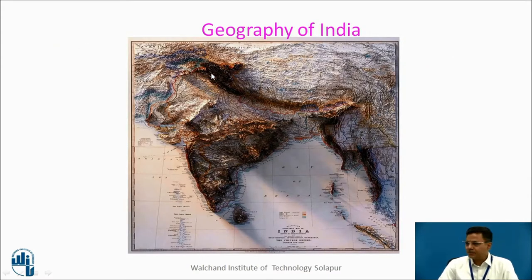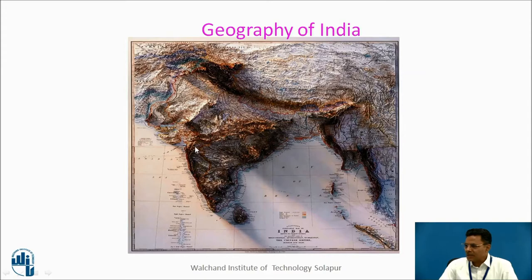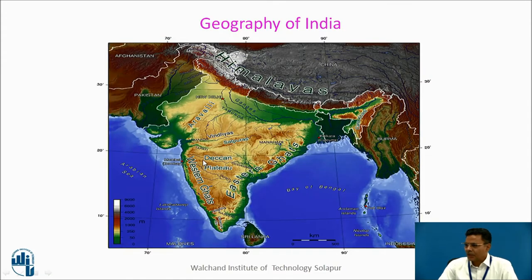This is the geography of India. These are the Himalayas, the Western Ghats, and the Eastern Ghats. Here are the Vindya and Satpuda ranges. These are the river basins — the mountains and hills define the river basins, and the ridge lines of these mountains form the demarcating boundaries. So these are the river basins: the Ganga Basin, the Narmada Basin, Taapi Basin, Godavari Basin, Krishna Basin, Kaveri Basin, and so on.